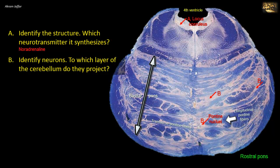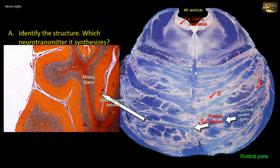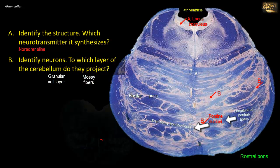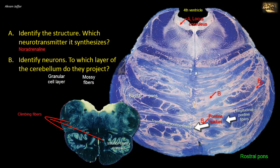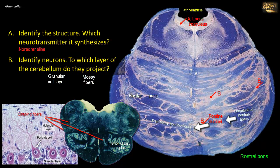The pontine nuclei project to form the transversely running pontocerebellar fibers that cross the midline to reach the cerebellum via the middle cerebellar peduncle. These fibers constitute the mossy fibers, which synapse with neurons in the granular cell layer of the cerebellar cortex, the deepest layer. The cerebellum receives two types of afferent fibers: mossy fibers as described, and climbing fibers, which originate in the inferior olivary complex and synapse in the molecular layer of the cerebellar cortex, the most superficial layer.